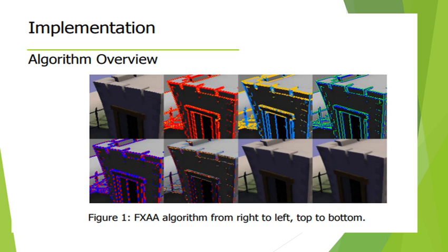It then checks local contrast to avoid processing non-edges. The detected edges are highlighted in red, and the contrast differentiation helps identify which pixels to process. Finally, the input texture is resampled given a sub-pixel offset, where each pixel is uniformly multiplied by a matrix that creates the blur effect.